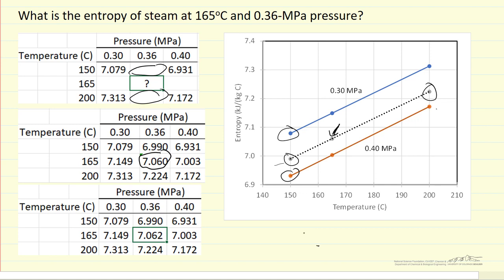Well, we could instead have done it in the reverse way and first calculate the values at 165 for the two pressures and then interpolate between the two pressures. You see we get almost the same number.